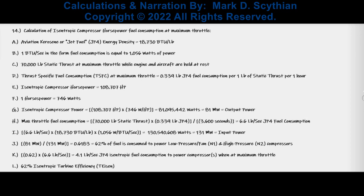Using the same methodology and calculation iterations to compute the isentropic compressor horsepower fuel consumption and isentropic turbine efficiency, we yield 4.1 pounds per second to theoretically keep the compressor running at max throttle. That yields a 62% isentropic turbine efficiency.